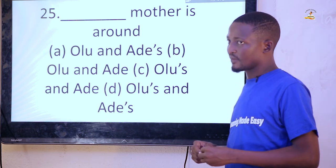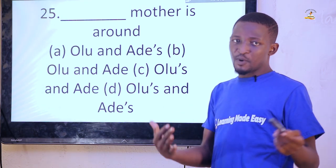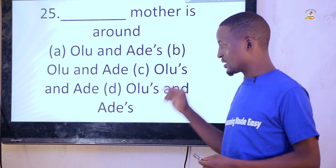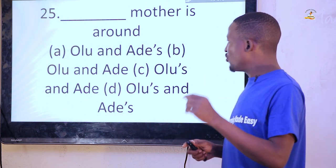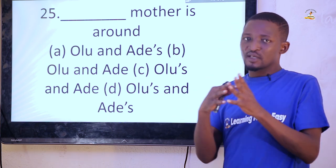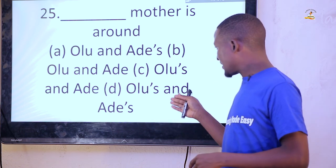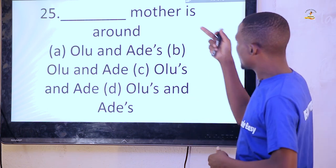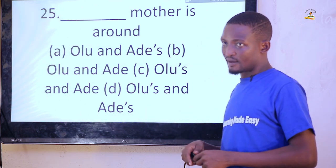We are talking about possessives — compound possessives — where two or more people possess the same entity. The rule says the last person should be the one to take the possession. We have a single mother who gave birth to both Olu and Adi, so you say 'Olu and Adi's mother.' If you put possessives on both, they will own different mothers, like option D — 'Adi's and Olu's mother' — meaning different mothers. Since we are talking about a singular mother, 'Olu and Adi's mother is around' is option A.